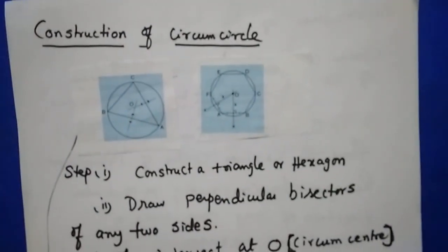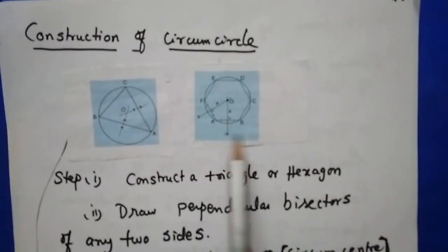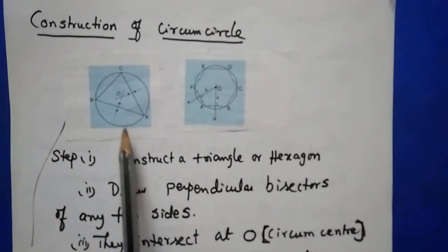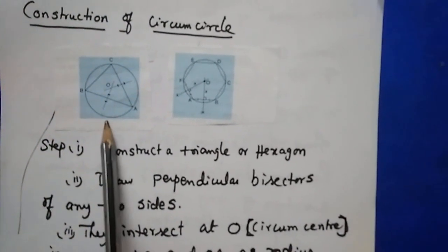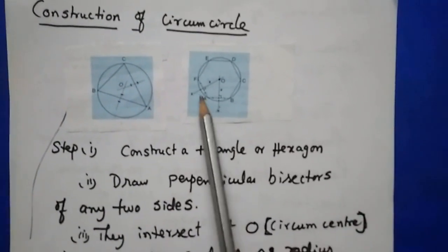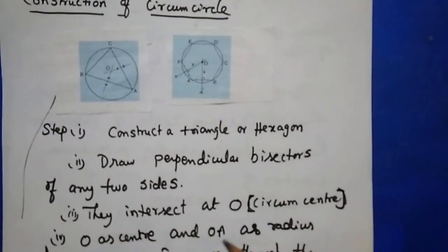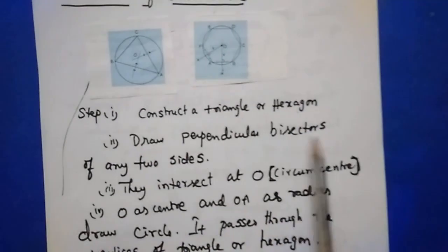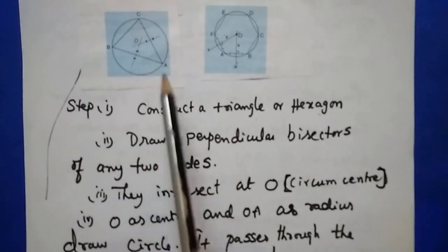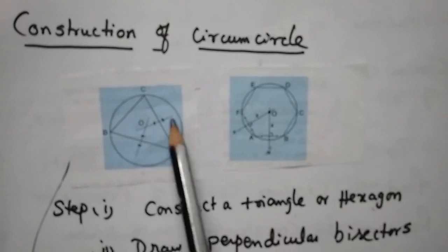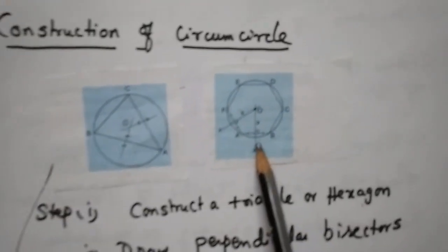Now I am going to teach the construction of the circumcircle for a triangle or hexagon. Step one: construct a triangle or hexagon as required. Step two: draw perpendicular bisectors of any two sides. For a triangle, construct the perpendicular bisector of AB and AC — they intersect at O. For a regular hexagon, draw the perpendicular bisector of AB and FA — they intersect at O.